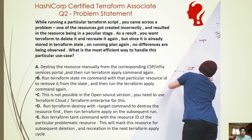Option A: Destroy the resource manually from the corresponding CSP infrastructure or services portal and then run Terraform apply again. Option B: Run terraform state rm with that particular resource ID to remove it from state, then run Terraform apply again. Option C: This is not possible in the open-source version — you need Terraform Cloud or Terraform Enterprise. Option D: Run terraform destroy with the -target flag to destroy the resource first, then run Terraform apply. Option E: Run terraform taint with the resource ID of the problematic resource; this will mark the resource for subsequent deletion and recreation in the next Terraform apply cycle.